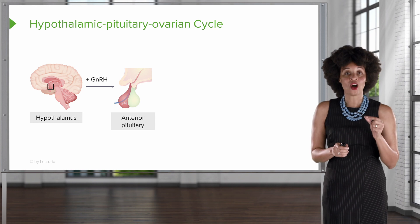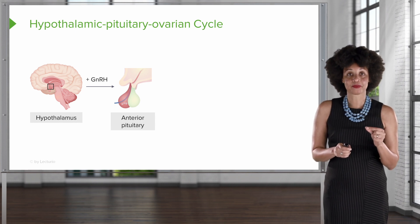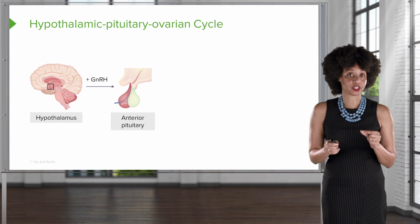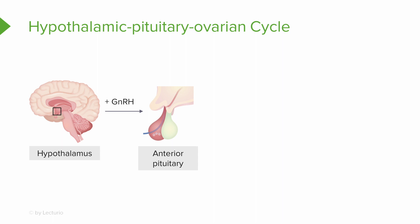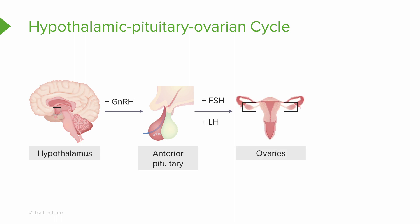The GNRH acts on the anterior pituitary. There are two parts of the pituitary: the anterior side and the posterior side. Under the influence of GNRH, the anterior pituitary releases two hormones known as FSH — follicle stimulating hormone — and LH, luteinizing hormone.